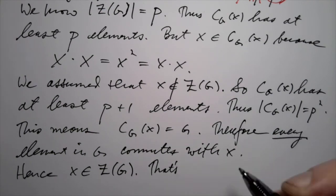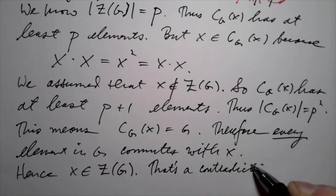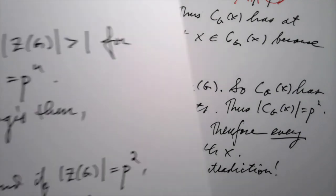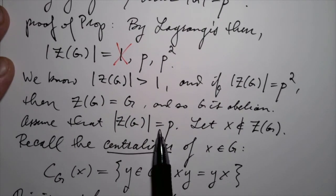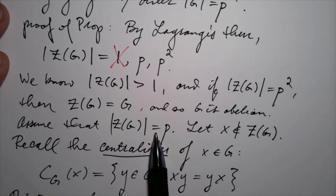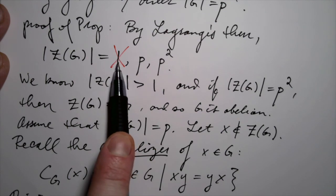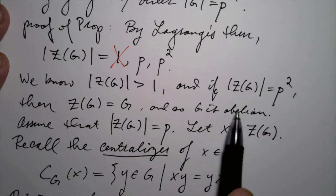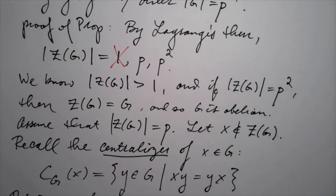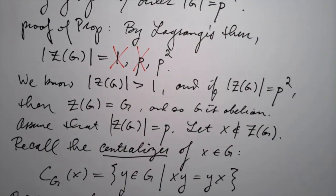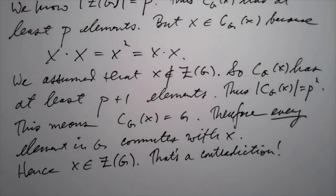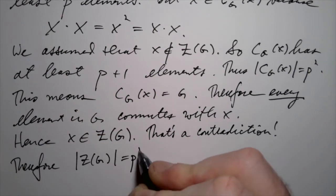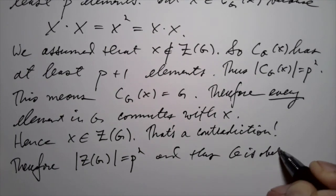That's a contradiction — we assumed X was not in the center. So what assumption did we reach a contradiction with? It was the assumption that the order of the center was P. We went through the possibilities: size 1 was ruled out by our hypothesis, size P leads to a contradiction, so the center must have P squared elements. Thus the center equals the entire group G, and therefore G is abelian.